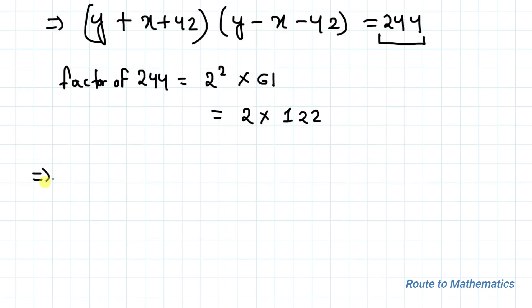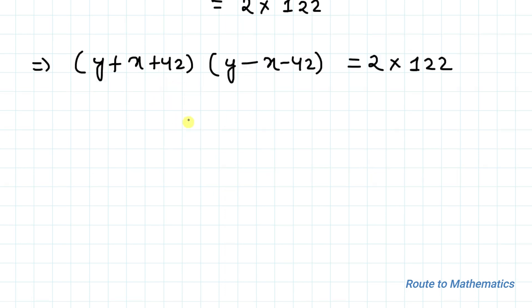We can write this equation as y plus x plus 42 multiplied with y minus x minus 42. By observing this equation, we can write y plus x plus 42 must be greater than y minus x minus 42.